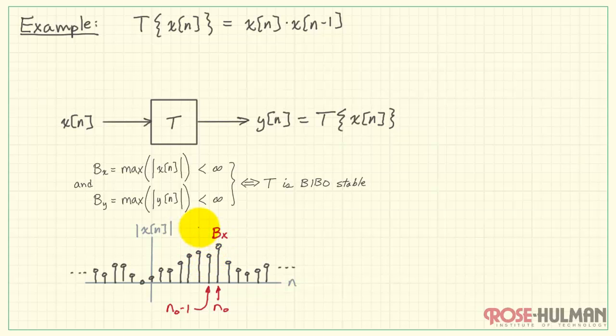Now, the previous input could potentially be as high as the bound, b_x, but it will never be higher, because by definition, b_x is the bound. What does that mean after this particular signal passes through the system?